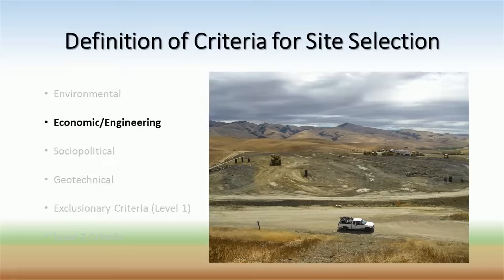Economic and engineering considerations take into account the feasibility of a site in terms of overall economic cost, as well as construction and operation. Cost is a large deciding factor on whether a potential site is a realistic option. Examples include the property value of the land, the economy of the surrounding community, operation and maintenance expenses, and construction costs. For example, if a landfill is built in the middle of nowhere, additional expenses would be incurred in transportation of construction equipment and garbage vehicles.